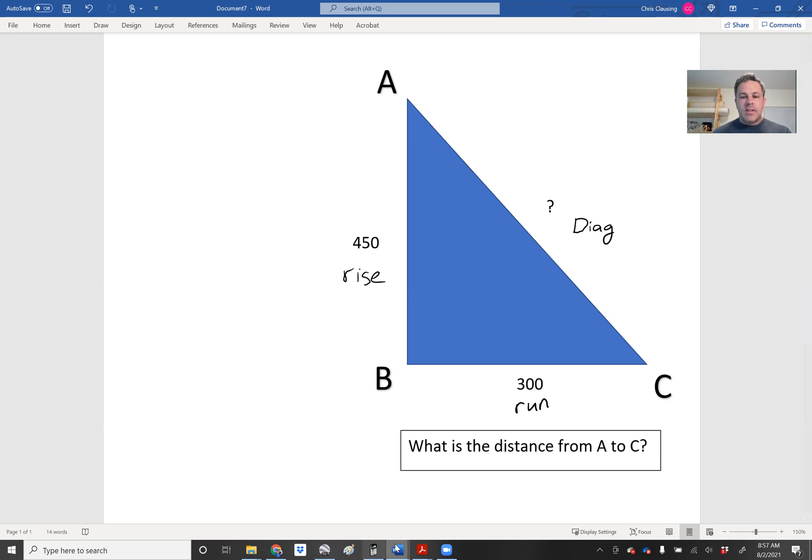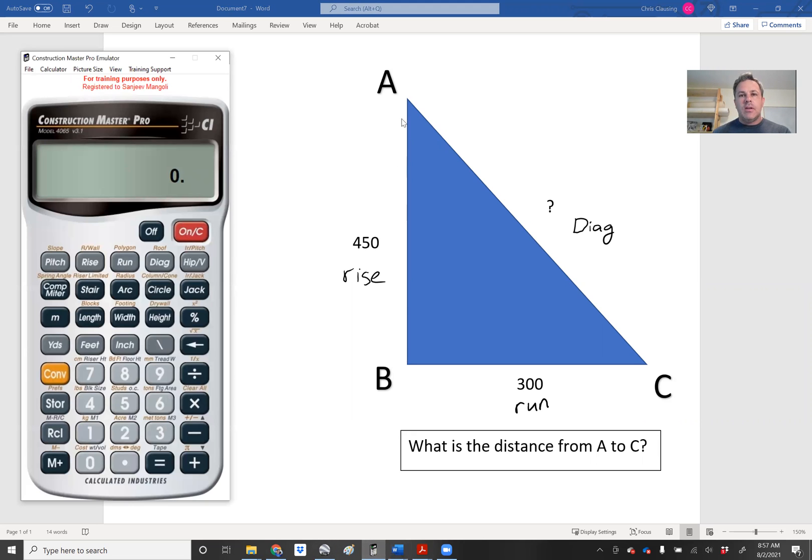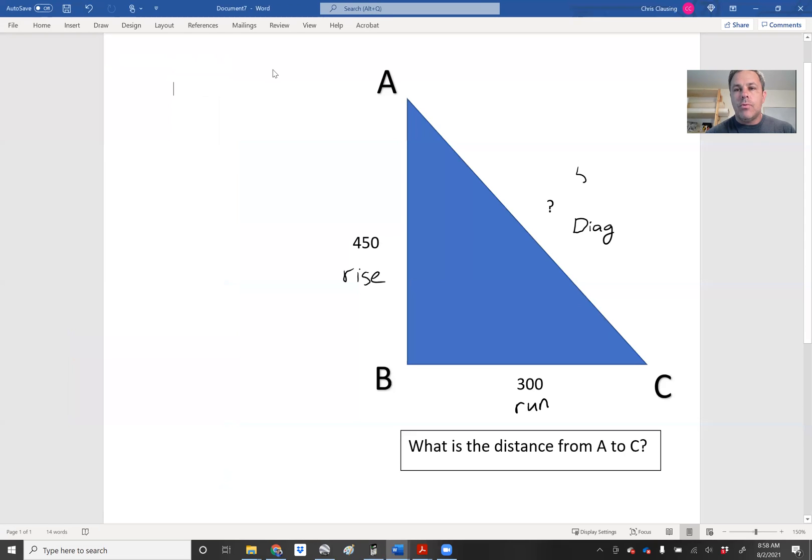So if we go back to the calculator, we can calculate this A to C by simply doing this. We're going to put 450 rise, 300 run, and just click diagonal. And you'll get the distance from A to C. In this case, we're just going to round up. It's going to be 541.